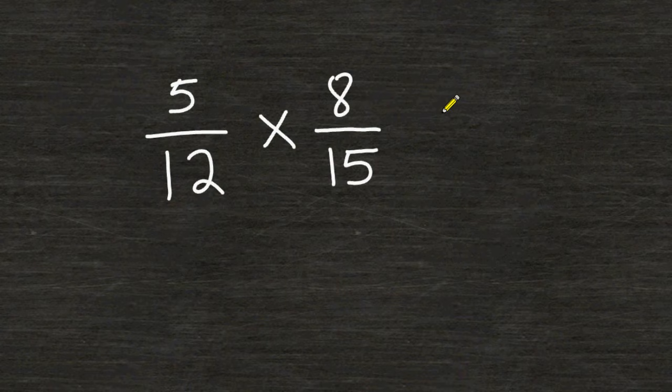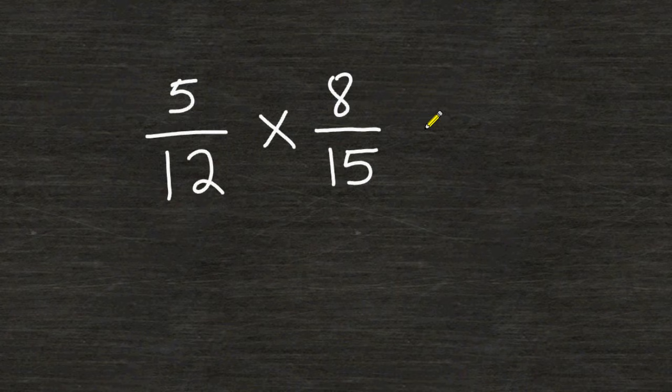Let's try another example. This time we are multiplying 5/12 by 8/15. Remember, when using cancellation, you are only allowed to use one numerator with one denominator at a time.